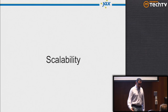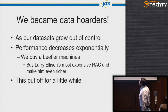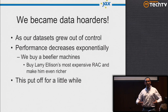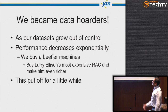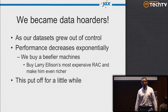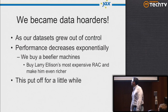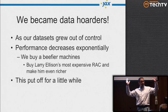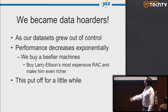Next section: scalability. We became data hoarders. As databases grew out of control with more data, performance decreased exponentially. We started spending a lot of money buying the next big machine — multi-core servers, Oracle RAC — which put the problem off for a while. You'd buy a new Oracle RAC and performance would come back to an acceptable level.